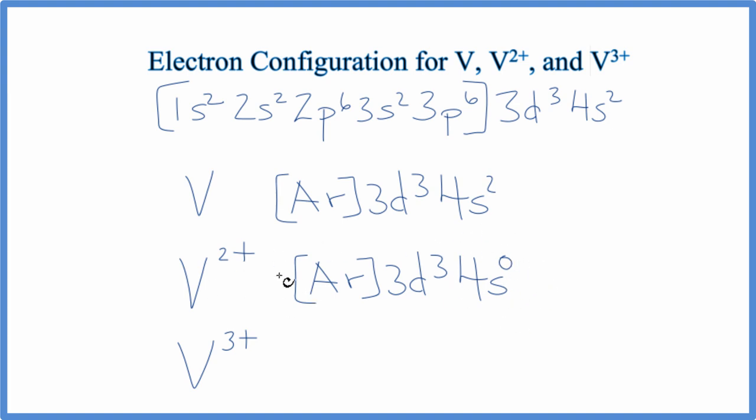For V3+, now we're just going to lose another electron. Instead of three we'll have two, and that's our electron configuration for V3+. If you had V4+ you'd lose another one and so on.